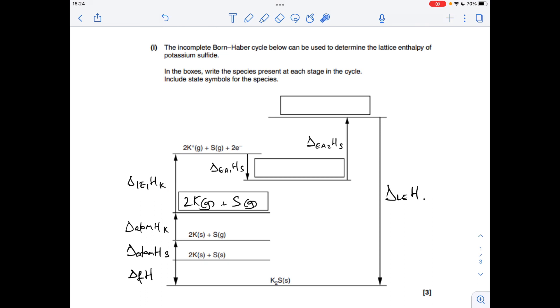Next thing we've got to do is ionise the sulphur. It happens in 2 stages. So the first electron affinity is the first part of that. So that's where one of these electrons is going to go onto the sulphur gaseous atom. So we've already got the 2K+ gas, but we're going to generate an S- gas. And there's one electron left.